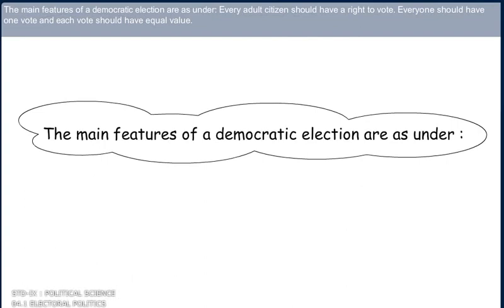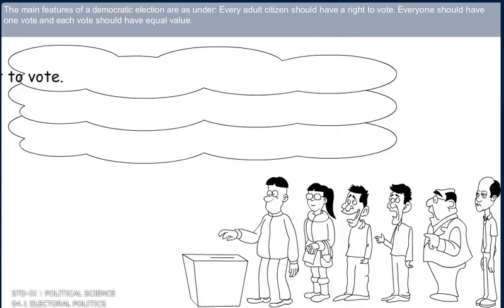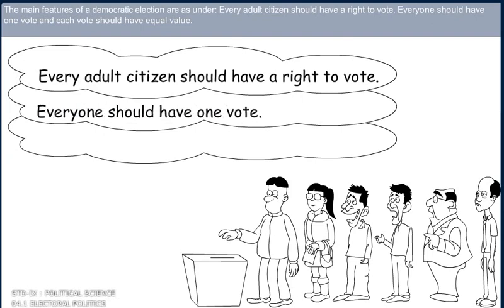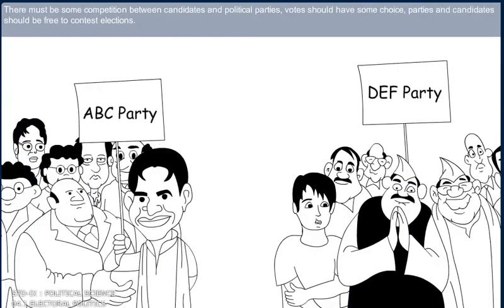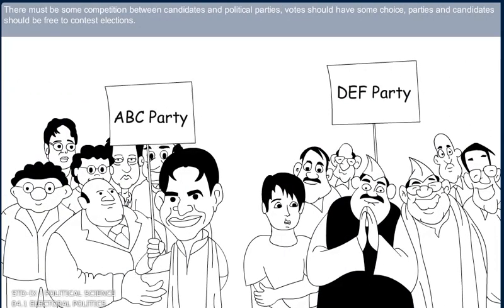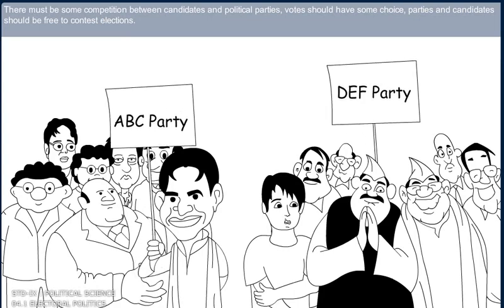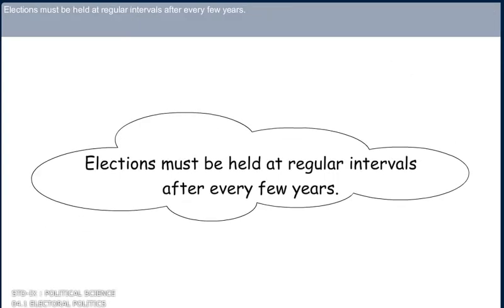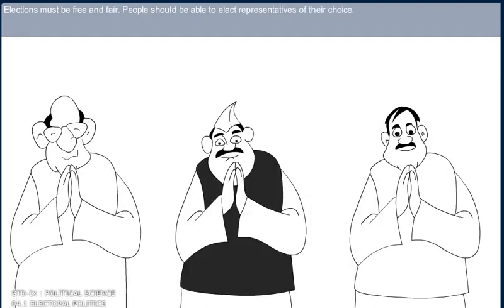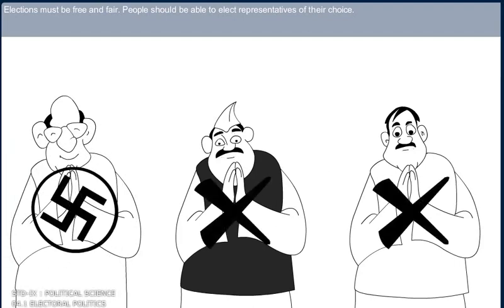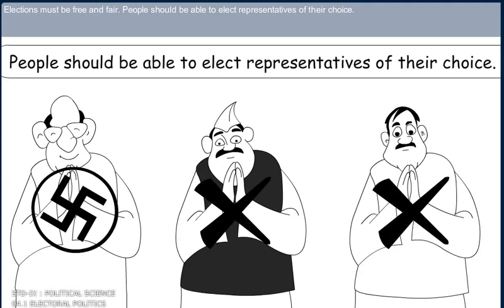The main features of democratic elections are as follows: every adult citizen should have a right to vote; everyone should have one vote and each vote should have equal value; there must be some competition between candidates and political parties; voters should have some choice; parties and candidates should be free to contest elections; elections must be held at regular intervals after every few years; elections must be free and fair; and people should be able to elect representatives of their choice.